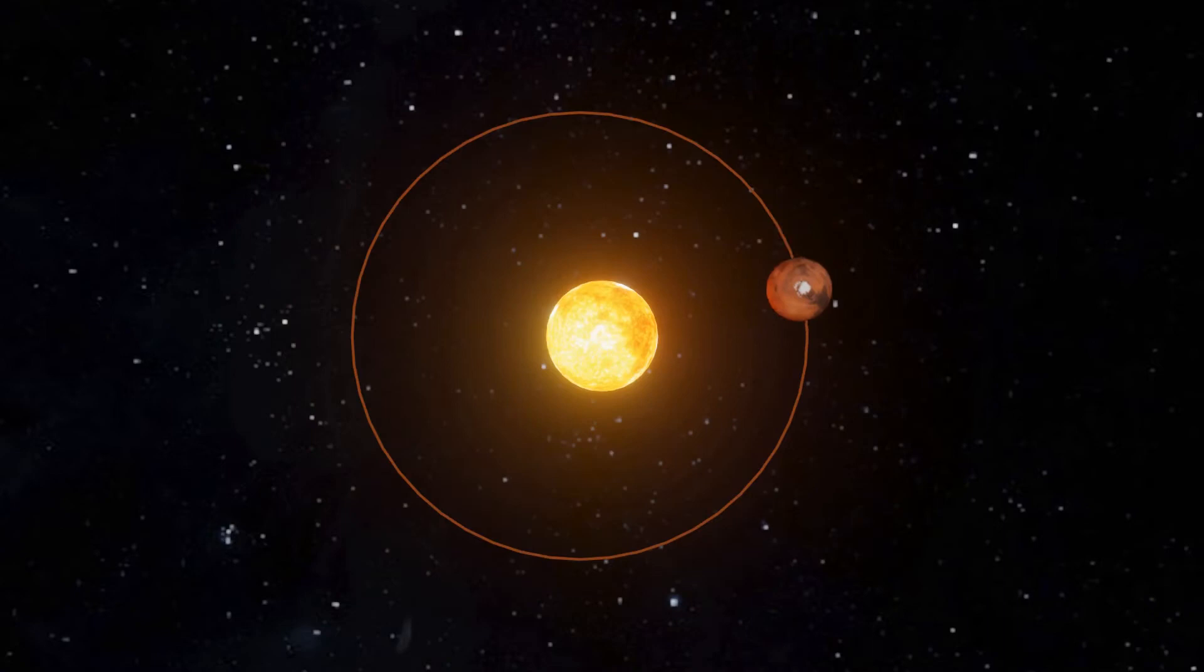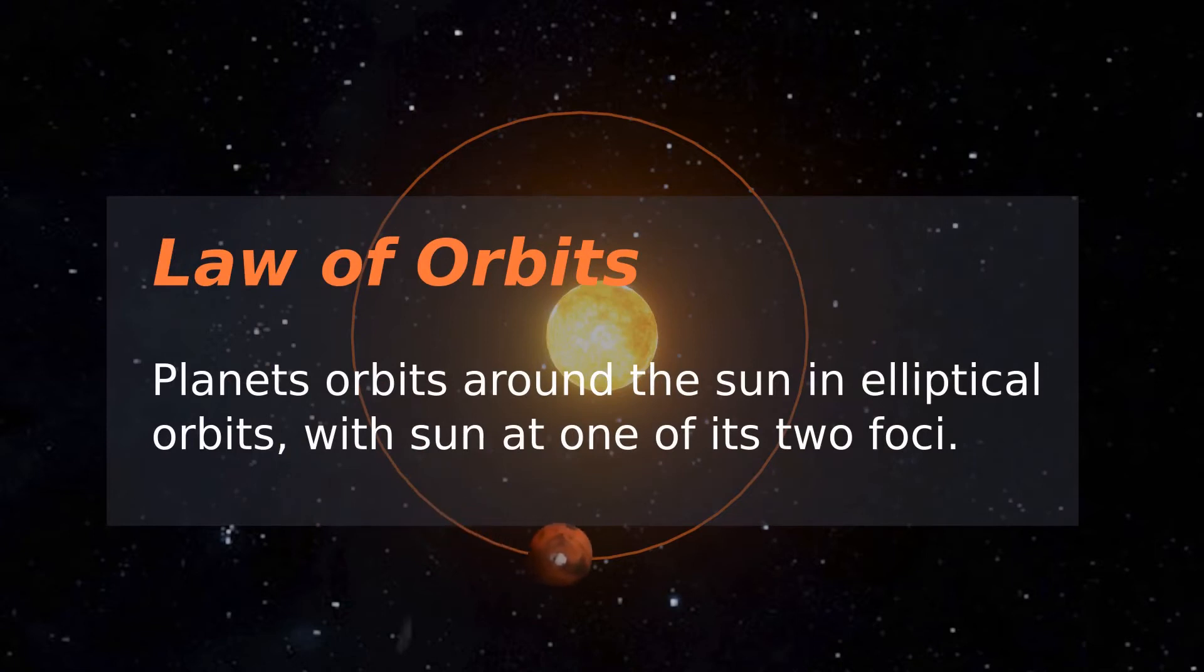This led Kepler to form his first law of planetary motion, the law of orbits, which says that the orbits of planets are ellipses with the sun at one of the two focal points.